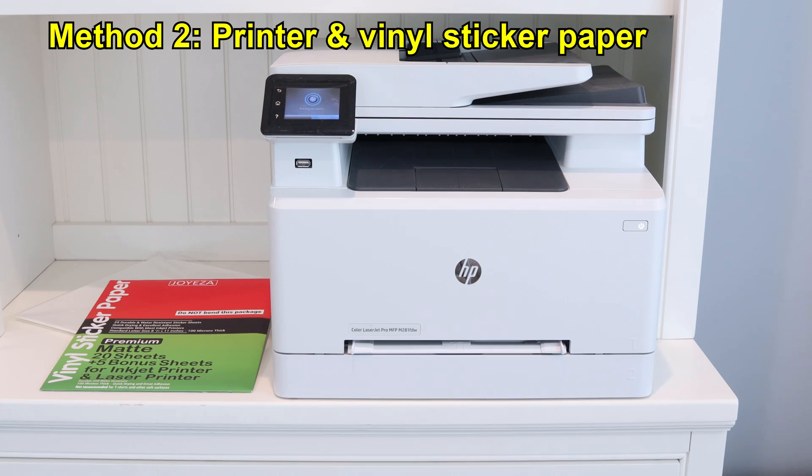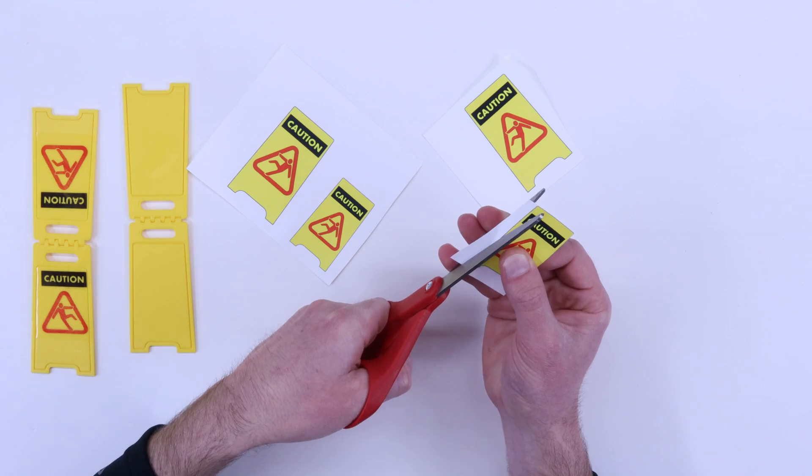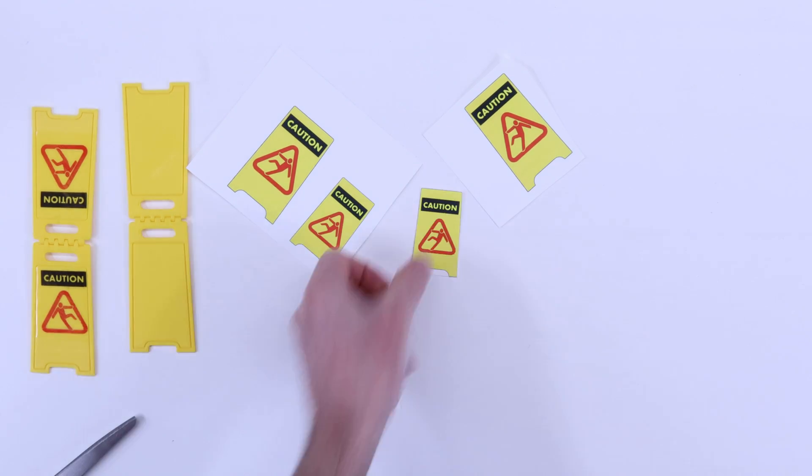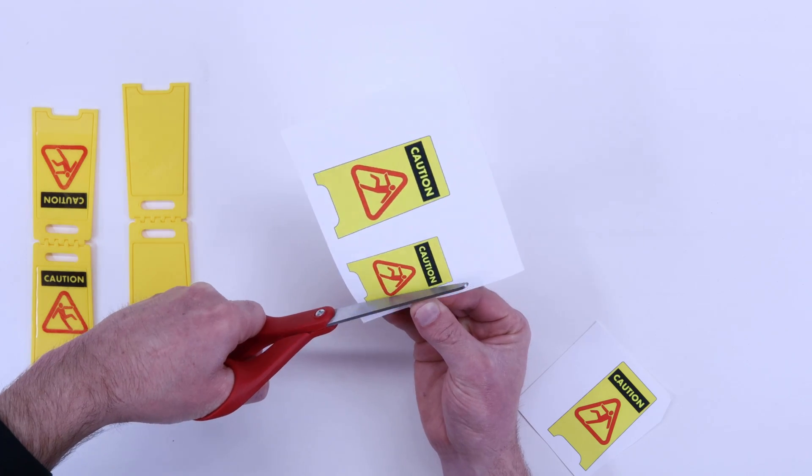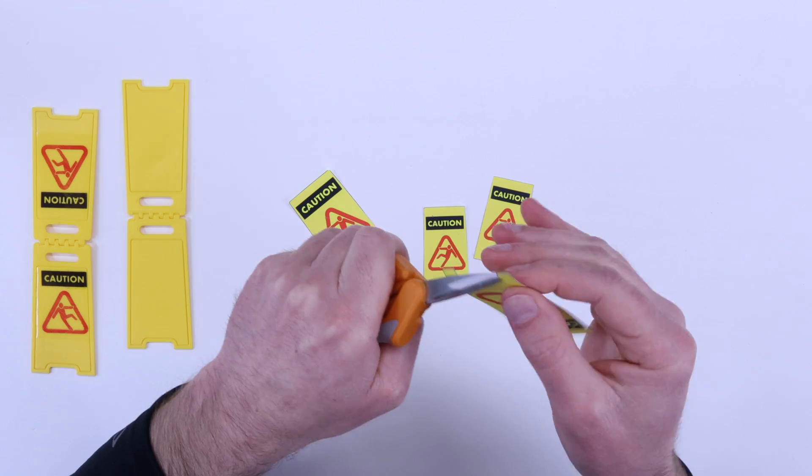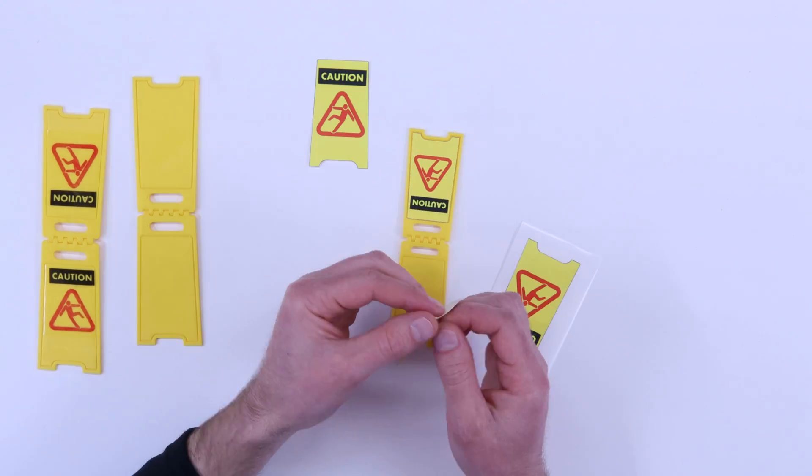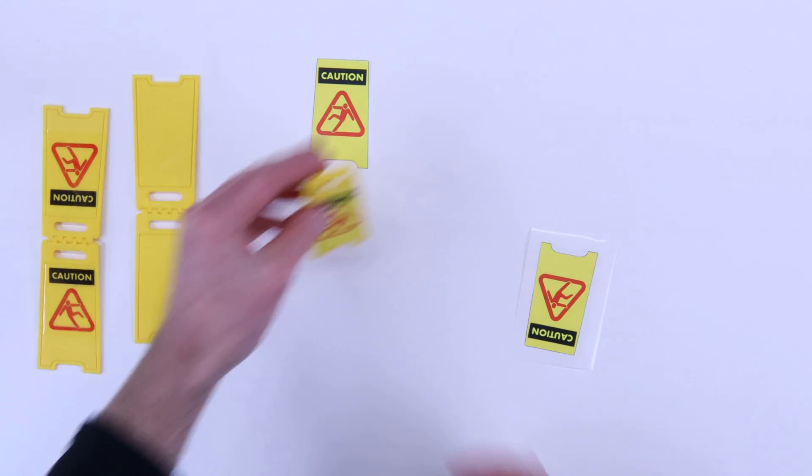The next method I used for adding graphics or images was just buying some simple vinyl sticker paper and printing directly on it with my home printer. I happen to have a laserjet printer but you can get vinyl sticker paper for any typical household printer. After printing out the images I carefully cut them out by hand and stuck them onto the prints. This is easiest on flat surfaces but works well on curves and complex geometries as well.